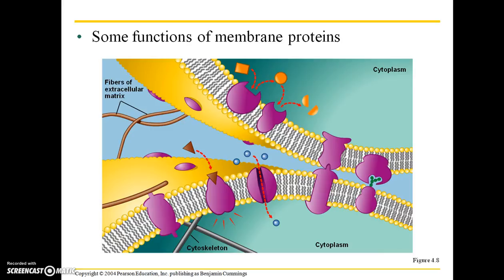So there are many different types of proteins. Some of these are attached to the cytoskeleton and the extracellular matrix. Some of them are useful for cell signaling — for example, cascading effects such as hormones circulating throughout the body.